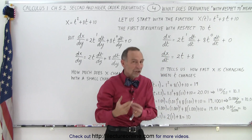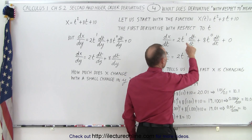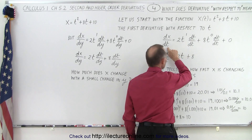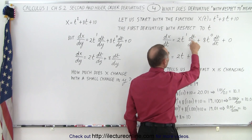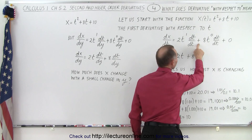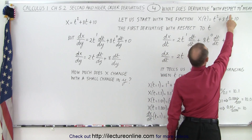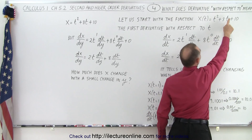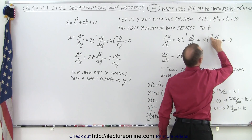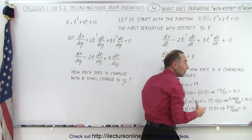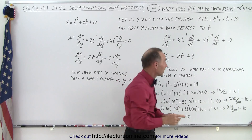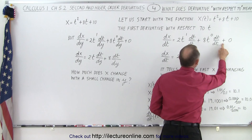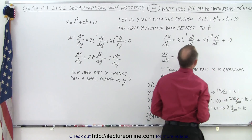Using the chain rule, we have to take the derivative of the variable t with respect to t, which is dt/dt. Then we have the exponent 1: 1 times 8 is 8, t to the exponent 1 minus 1 which is 0, times the chain rule term — the derivative of t with respect to t — plus the derivative of a constant which is 0.